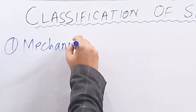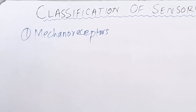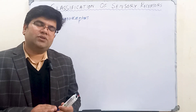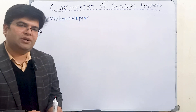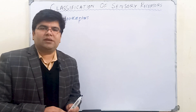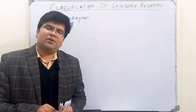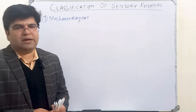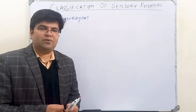Number one is mechanoreceptors. Mechanoreceptors are those receptors which are stimulated by some mechanical stimulus — meaning that a mechanical stimulus puts pressure on the sensory receptor, causing compression of the receptor or stretching in the tissues. Mechanoreceptors are the largest category of all receptors; they are present in our skin, and we call them cutaneous mechanoreceptors.